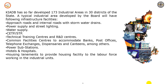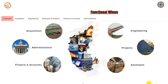Common facility centers accommodate banks, post offices, telephone exchanges, dispensaries, and canteens, among others. There are also power substations, hotels and hospitals, and housing amenities to provide housing facilities to the labor force working in the industrial area. This is the functional wing of the Karnataka KIADB.